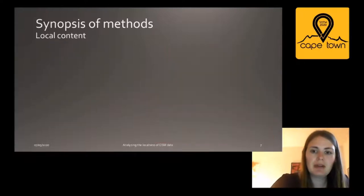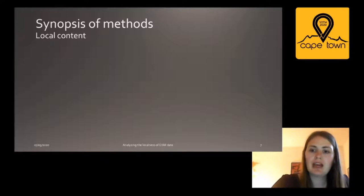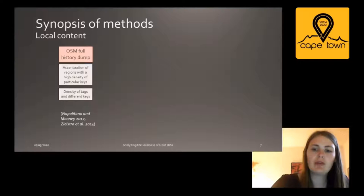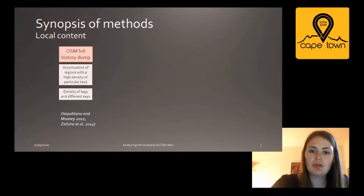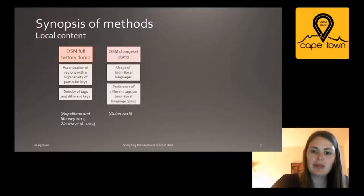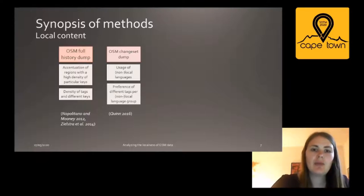This leads to the examination of what local content is. Methods looking at local content seek to find out where the density of local information is high. Some approaches focus on the OSM full history dump — for example, looking at particular keys considered relevant and observing the density of these keys. Another approach is to observe the total density of tags or unique keys per object. Quinn also looked at the OSM changeset dump, focusing on the use of languages in the comments. In the case of South America, he observed the preference of different tags per language group to determine if a changeset was made by a local or remote mapper.